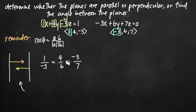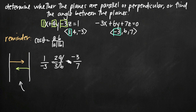As we can see, reducing 4 over 6 gives 2/3, so this equation is not true. 2/3 is not equal to -1/3, and neither of those are equal to -3/7. So my normal vectors are not parallel, which tells me that my planes are not parallel. I can conclude: not parallel.